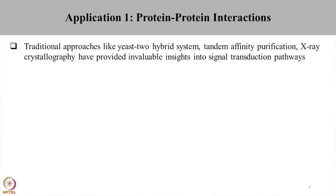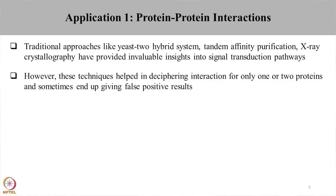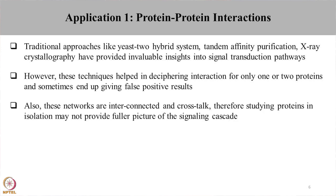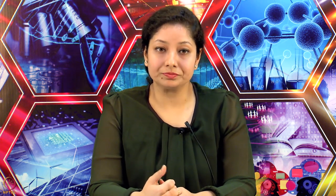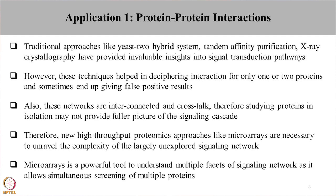Traditional approaches like yeast two-hybrid system, tandem affinity chromatography, etc. have provided invaluable insight into protein-protein interaction. However, these techniques just look at one or two proteins, study these proteins in isolation, and sometimes even end up giving false positive results. These signaling pathways are dynamic, therefore studying a protein in isolation might not provide a fuller picture of the interacting pathway. Therefore, high throughput platforms like protein microarrays can hold immense value to screen multiple proteins together and can be used to decipher the protein-protein interactions.